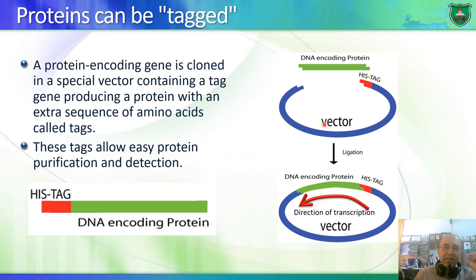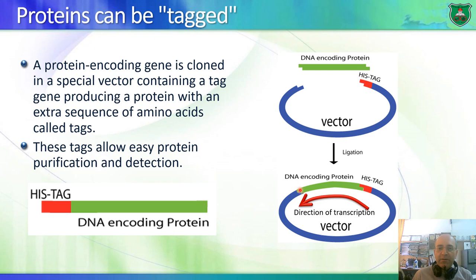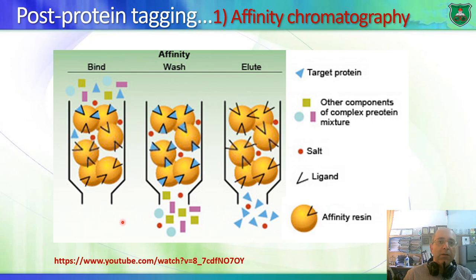To tag a protein, we use a vector containing a tag — a small piece of DNA encoding an amino acid sequence. We insert the DNA fragment of interest where the tag exists, so the tag becomes part of the gene. When expressed in bacterial cells, the tag is synthesized along with the protein and becomes part of it — a tagged or labeled recombinant protein — allowing us to identify, detect, or isolate the protein.